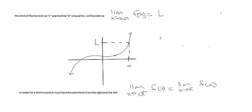It's important to remember that the function value is different than the limit. At the bottom, I've written some notation: in order for a two-sided limit to exist, we must have the limit from the right and the limit from the left equal each other. This will be a topic for a future video. The limit as x approaches a from the positive side is from the right — that would be from here down towards a.